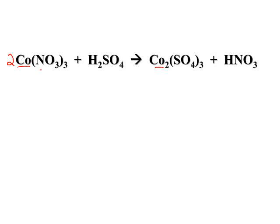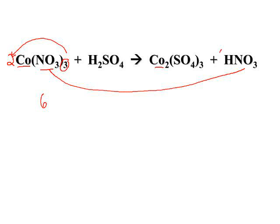Moving on, we're going to balance our nitrate ion as a unit. We can see that it stays together as NO3. We've got a total of three times two, or six nitrates on this side, so we'll put a six in front of the nitric acid to give us six nitrates on the right-hand side.